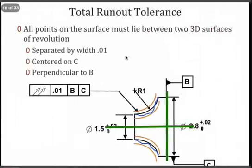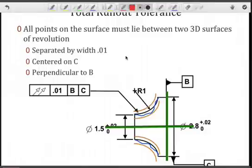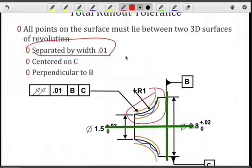So here's our total runout tolerance zone. As you can see here in this side view, we're going to have our tolerance zone here around the entire surface of revolution. It's separated by width of 0.01 and it's centered on C and perpendicular to B. Again, a tighter constraint than what we saw with the circular runout, which was just two dimensions.